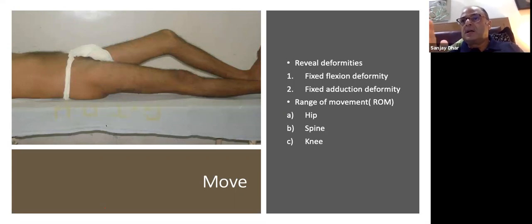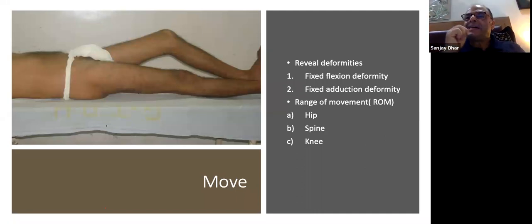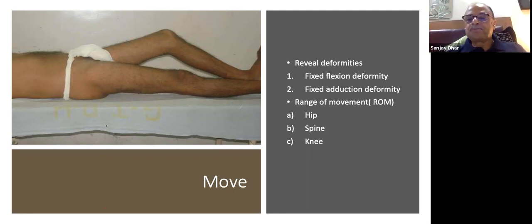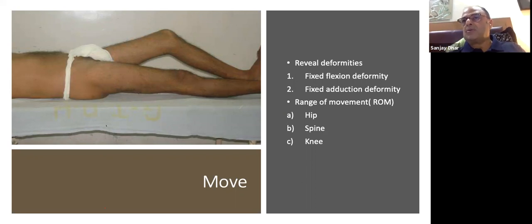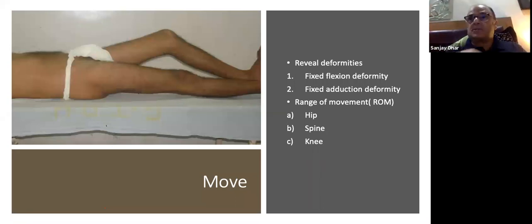For rotation deformity: if the foot points upward to the ceiling rather than 10° outward, that is an internal rotation deformity. You can draw an angle between the second toe and the heel to measure the angle of internal rotation or external rotation. For range of movement: assess the affected joint, the contralateral hip, and adjacent joints — spine, sacroiliac joint, and ipsilateral knee — because every joint adjacent to the pathological joint must be assessed.